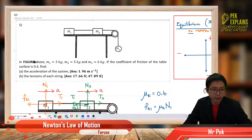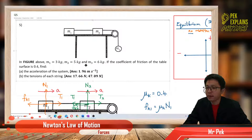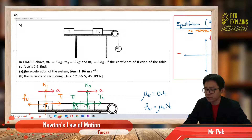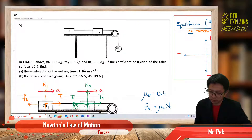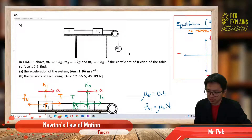In the figure above, mass 1 is 3 kg, mass 2 is 5 kg, and mass 3 is 6 kg. If the coefficient of friction of the table surface is 0.4, find the acceleration of the system and the tension of each string. So here you have three masses, three bodies.